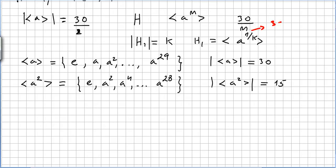So in our case N is 30. We took the divisor 2, so the order is 15.